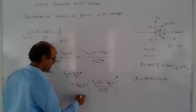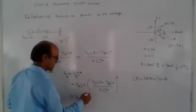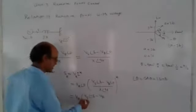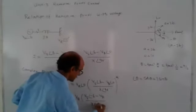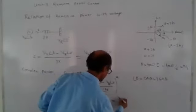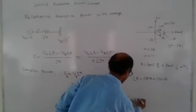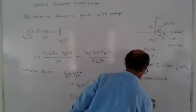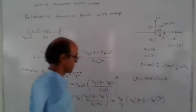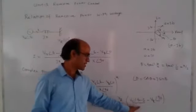So taking the conjugate of the current: VS is accepted at angle minus delta, then minus VR at angle zero, divided by X at angle minus 90 degrees. To expand this, each angle term can be replaced by cos theta plus j sin theta.